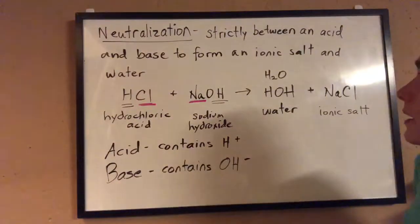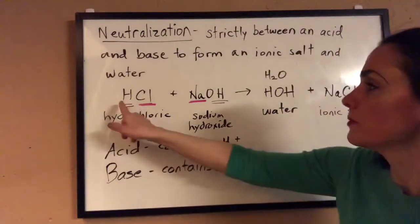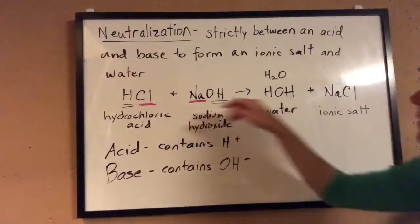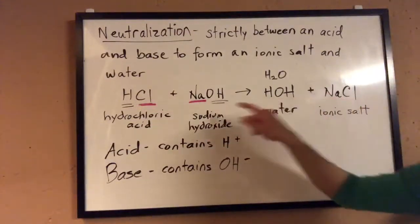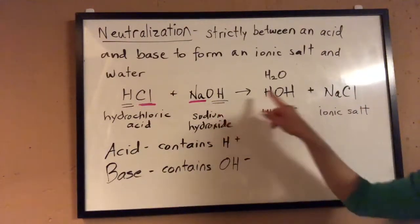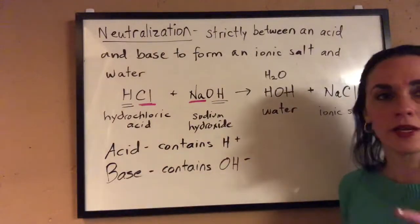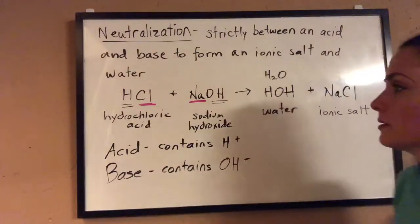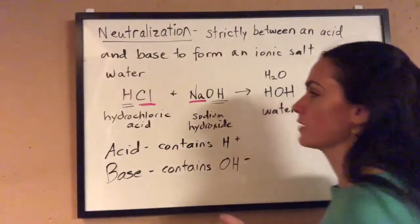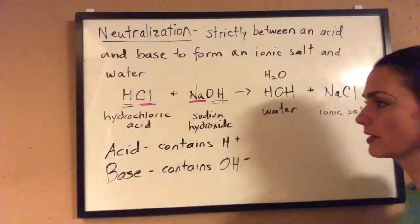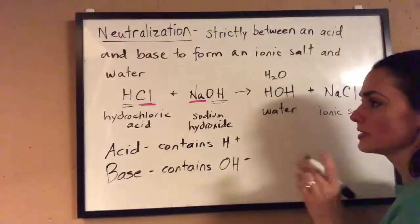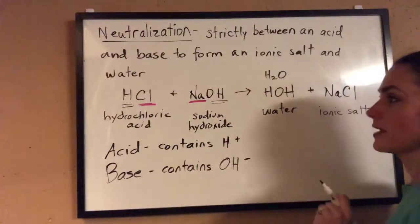Let's just check for balancing. One hydrogen, one hydrogen. One chlorine, one chlorine. One sodium, one sodium. One hydroxide, one hydroxide. You may ask why we split the hydrogens up — it's easier when you have polyatomic ions to balance the polyatomic ions as units.